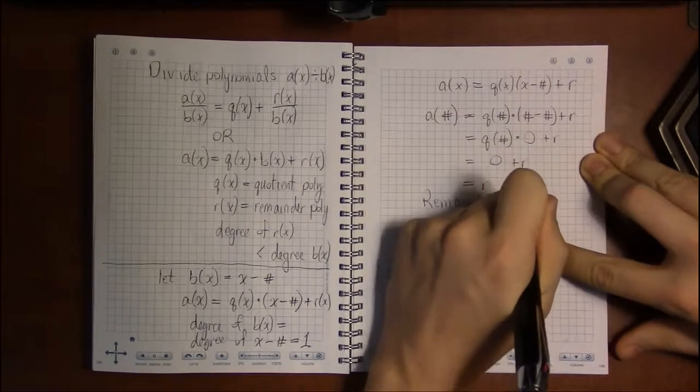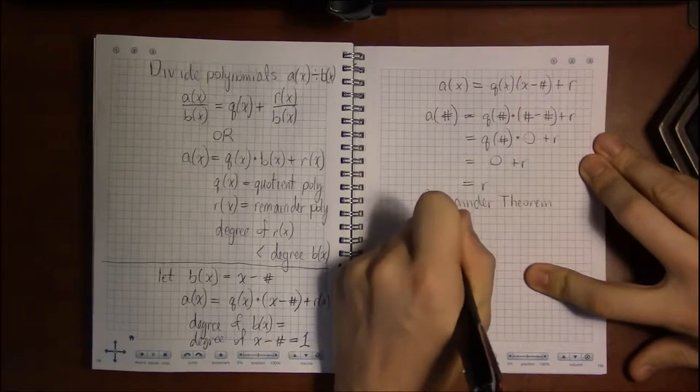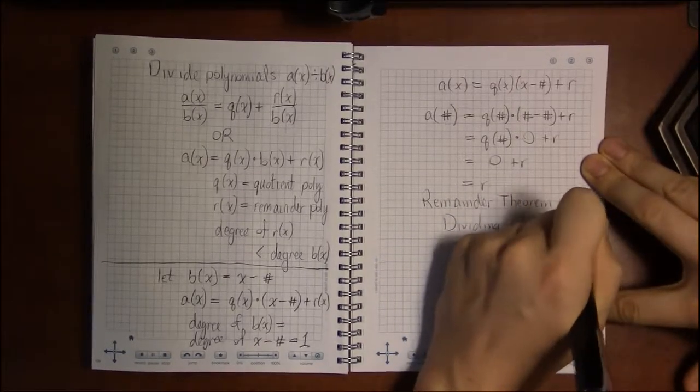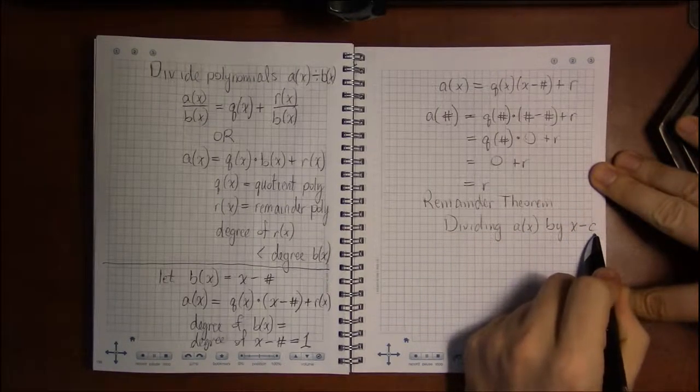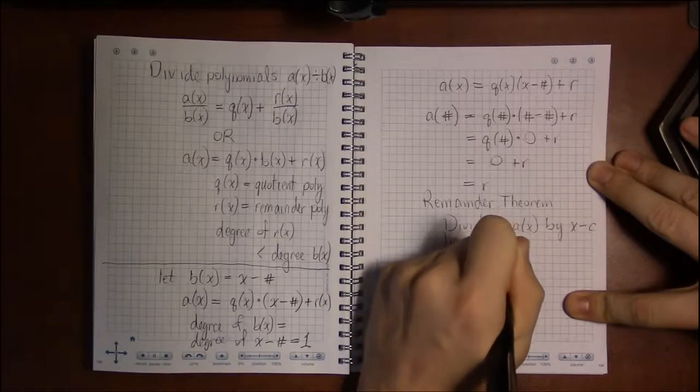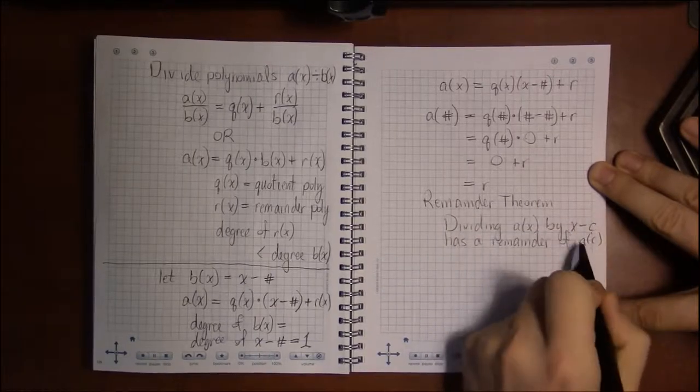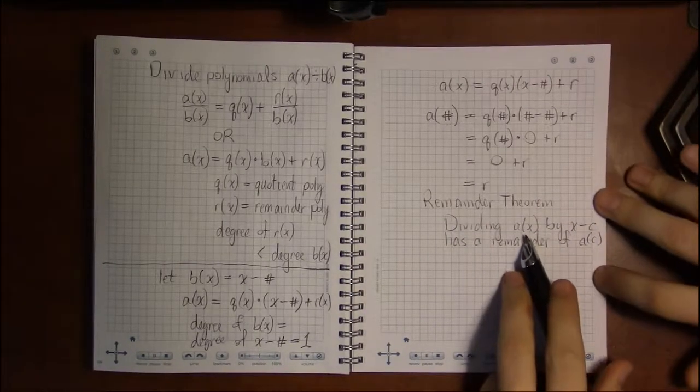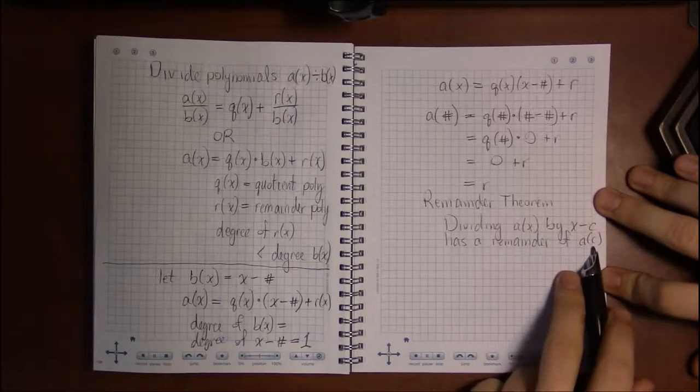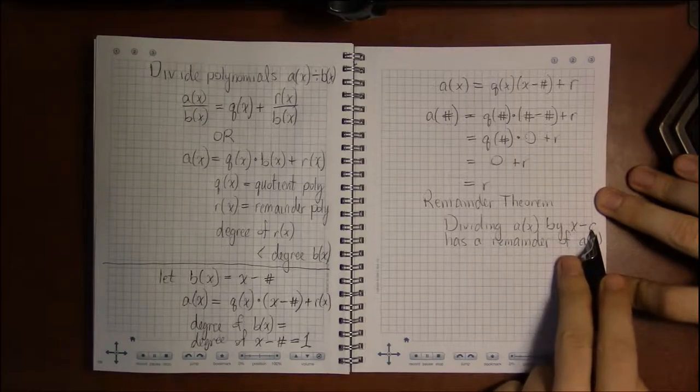And so A of this particular number is the remainder when dividing by this. This is called the remainder theorem. When you divide a polynomial by some X minus a number, so we'll call it C, give it a name. So dividing any polynomial, say A of X, by some X minus C, by an X minus some number, has a remainder of exactly A of C, A of that number. So we end up with two ways of evaluating a function: we can either evaluate a function by plugging in the number, or we can evaluate the function by dividing that polynomial by X minus the number and looking at the remainder.